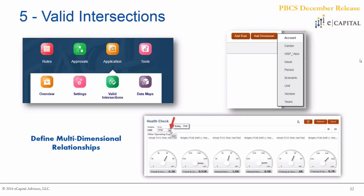The next one — again not necessarily new in 2017, but with a lot of new features added — is Valid Intersections. This is Oracle Planning's ability to define interdimensional security. For example, for forecast periods you can only load certain accounts, whereas in your budget process you might enable many more accounts to allow a greater level of detail during that planning cycle.